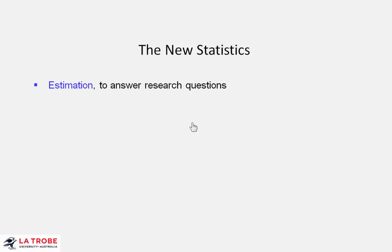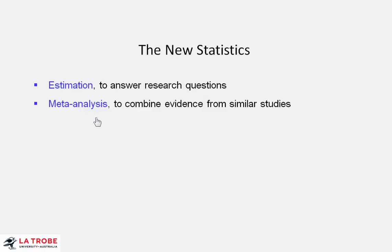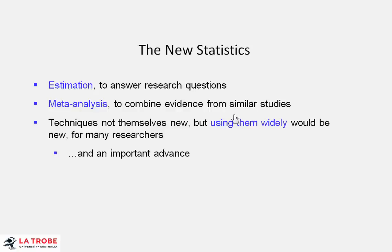The new statistics is a label I use for estimation as a general approach to answering research questions, and meta-analysis, which combines evidence from a number of similar studies. The techniques themselves are not new, but using them as the main approach to data analysis would, for many researchers, be new, and would be a distinct advance in the way they do research.